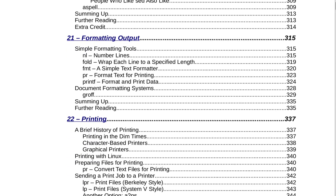Section 21 is Formatting Output on page 315. That includes simple formatting tools: nl to number lines, fold to wrap each line to a specified length, fmt as a simple text formatter, pr to format text for printing, printf to format and print data, document formatting systems, and groff. Summing up and further reading.